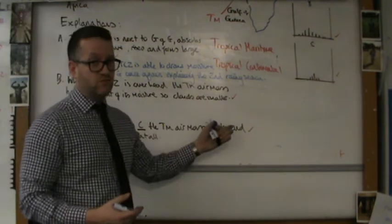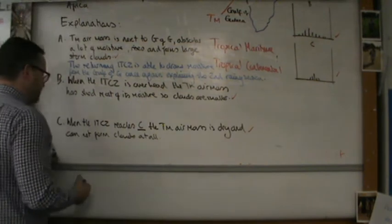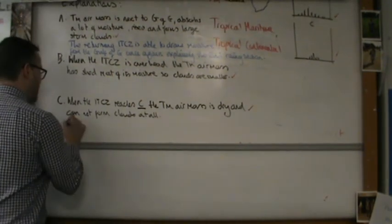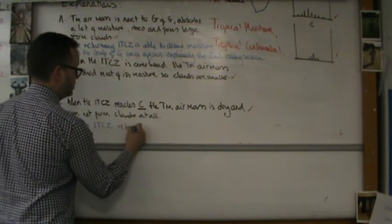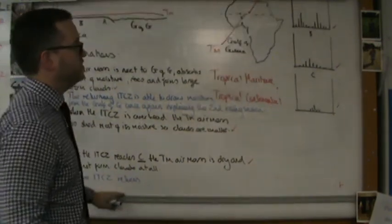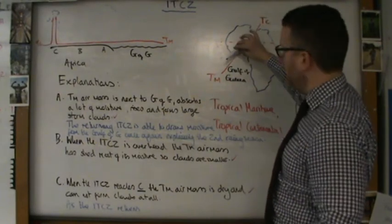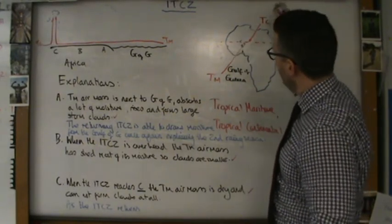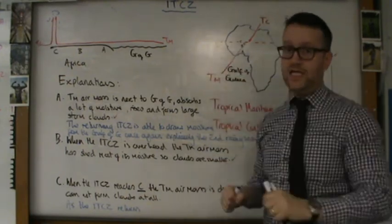Location B has not much to be said for it. But location C, as the ITCZ returns, I'll just pause there. As the ITCZ returns south, what you'll find is that this air mass, the TC air mass, is then dragged in over location C.